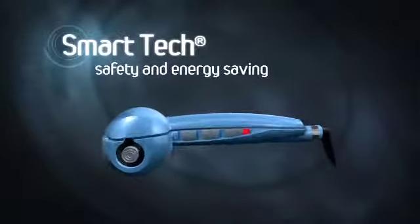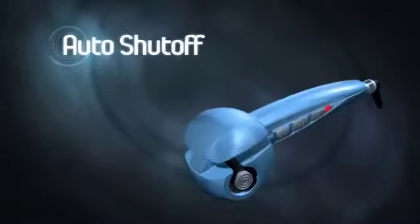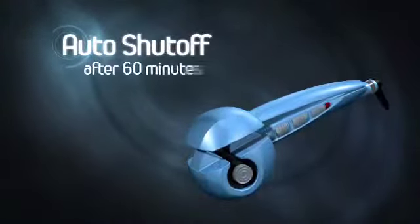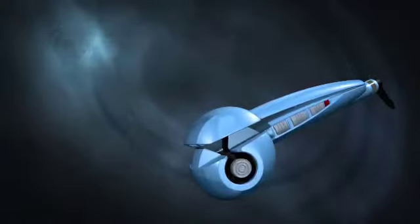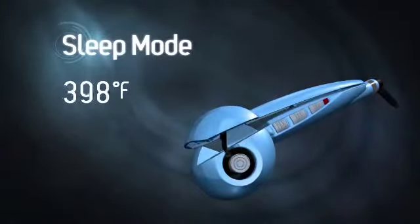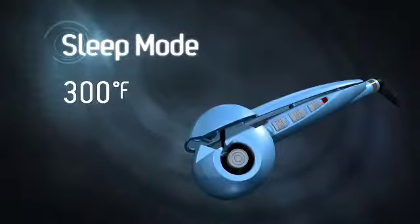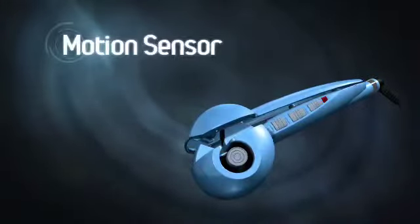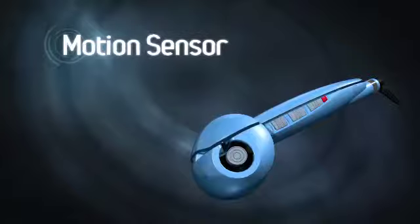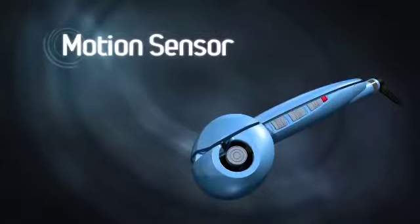Smart tech safety and energy-saving features include auto shut-off to turn the unit off after 60 minutes if you forget, sleep mode to lower the temperature to 300 degrees if Miracurl is idle for 20 minutes, and a motion sensor to heat it back up the minute you pick it up and close it.